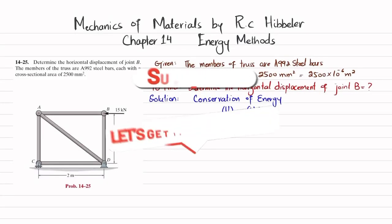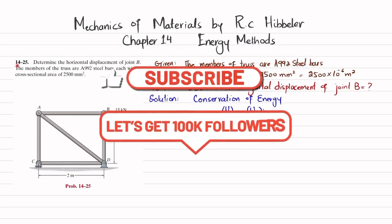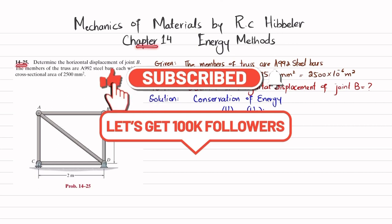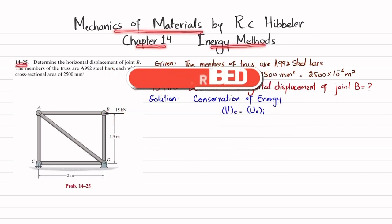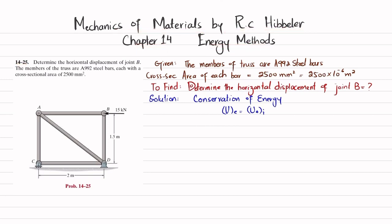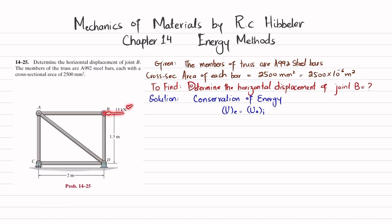Welcome back. In this video we are going to solve Problem 14-25, taken from Chapter 14, Energy Methods, from the book Mechanics of Materials by RC Hibbeler. The problem statement asks us to determine the horizontal displacement of joint B. The members of the truss are A992 steel, each with a cross-sectional area of 2500 square millimeters.